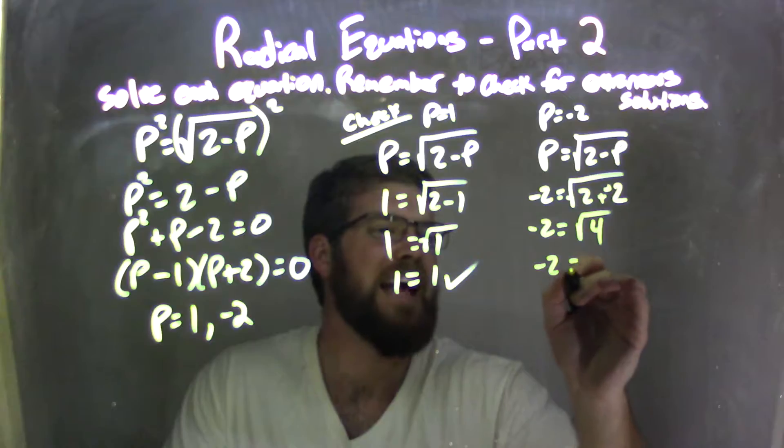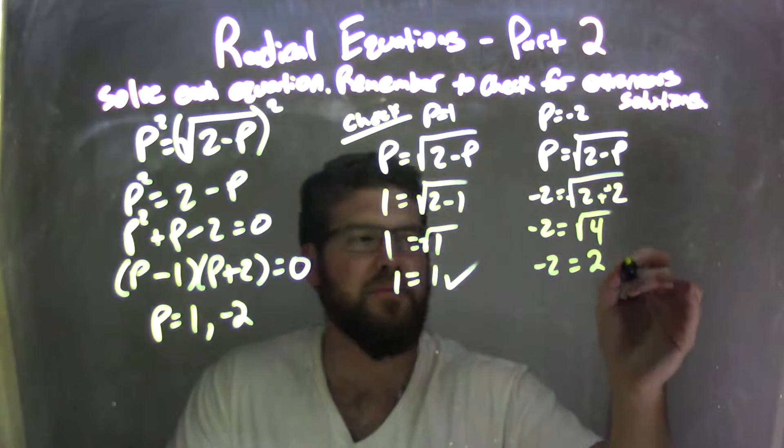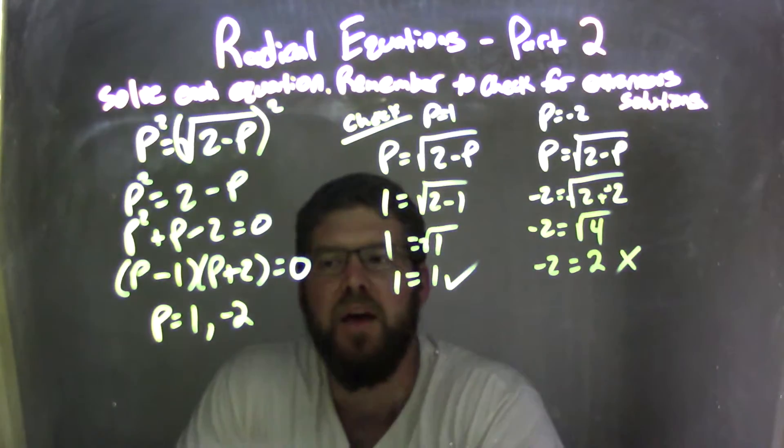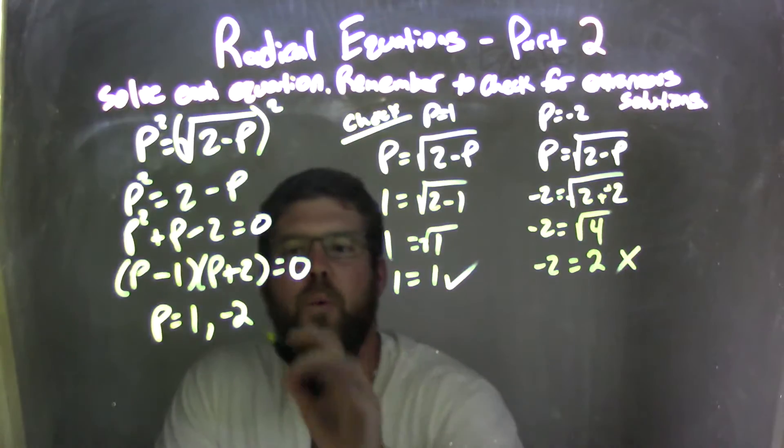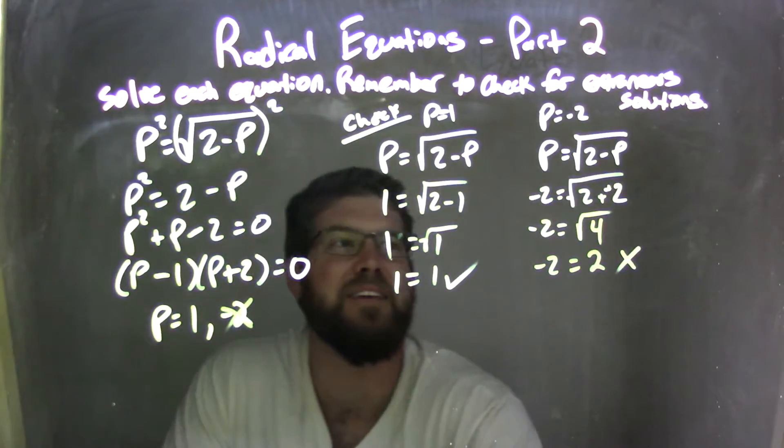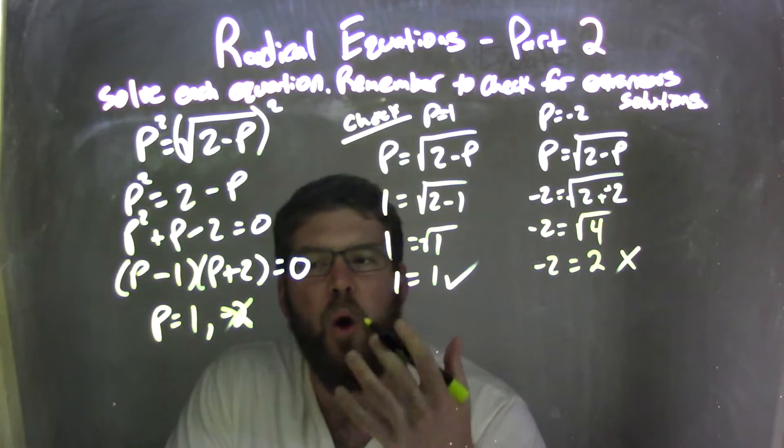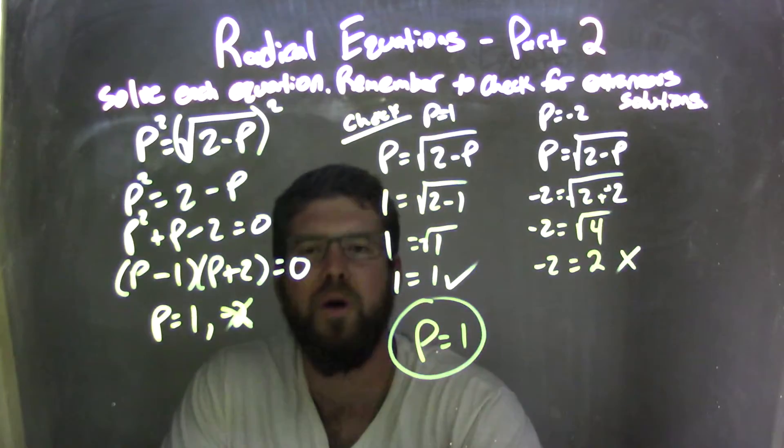The square root of 4 is 2. And does negative 2 equal 2? No, it does not. Since negative 2 does not equal 2, we can say that p equals negative 2 is an extraneous solution. So my only true solution is p equals 1.